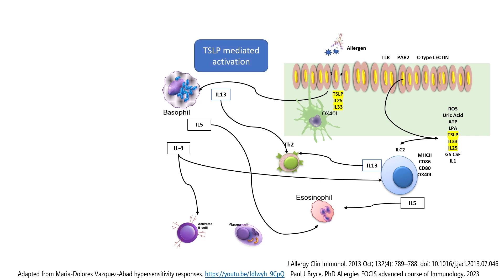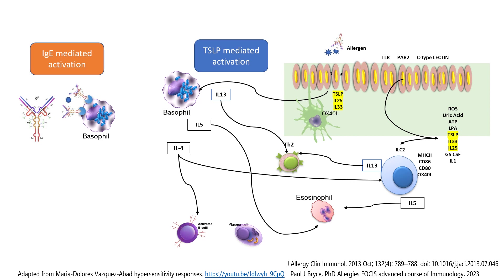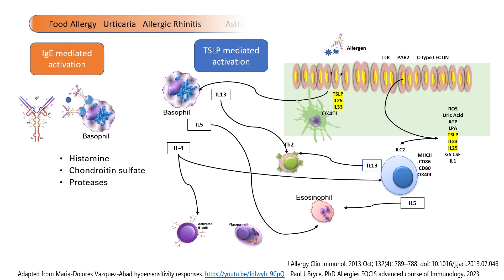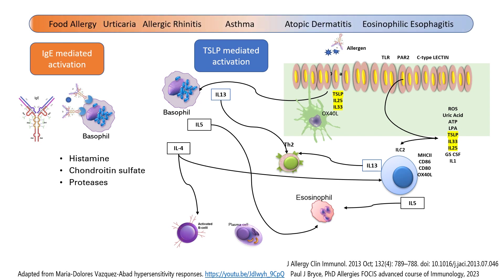This is what's being called TSLP-mediated activation, because this begins with the contemporary hypothesis of allergic reactions that will not be dependent on IgE. The other activation of basophils is IgE-mediated activation. TSLP could lead eventually to plasma cell and IgE production, so there may be a mix. There's a different balance between different diseases: food allergy will be more predominantly IgE-mediated activation with basophil degranulation, all the way to eosinophilic esophagitis, which could be more typical of a TSLP-mediated activation of the basophils.